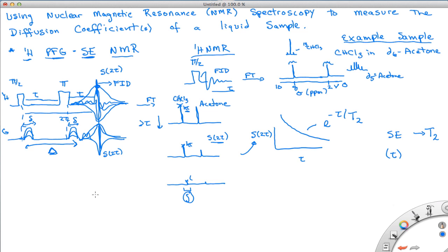So again we're plotting the signal 2 tau, but now we're going to plot it versus the gradient squared, and we'll see that it decreases.